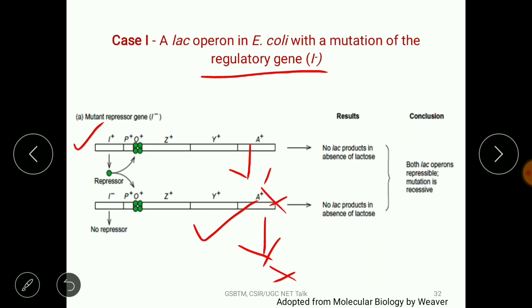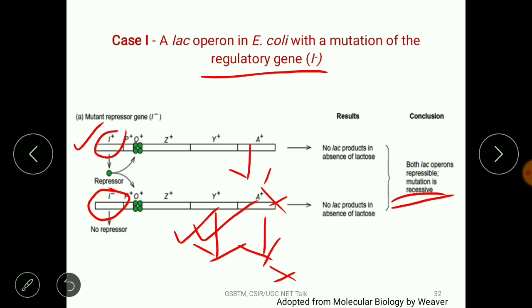From this observation we can conclude that the I-minus mutation is a recessive mutation, because it is not able to switch on expression of either operon. The I-minus mutation is fulfilled (complemented) by the I-plus wild-type gene, confirming it is recessive.